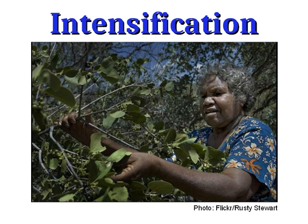we should think instead of varying levels of intensification, varying levels of manipulation of the environment, and varying levels of increased production for human use. We could start with hunter-gatherer societies that largely just take what nature produces on its own. There's very little manipulation of the environment there and a very low level of production, so hunter-gatherer populations tend to be very low per acre.